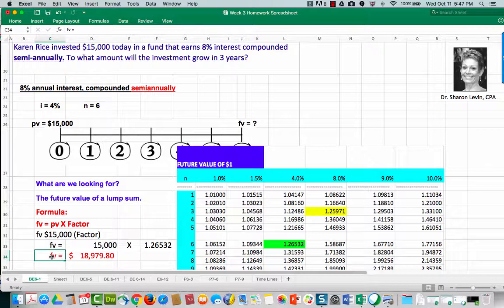So in other words, $15,000 invested today at 8% where the interest is compounding semi-annually, that will grow to an amount equal to $18,979.80.